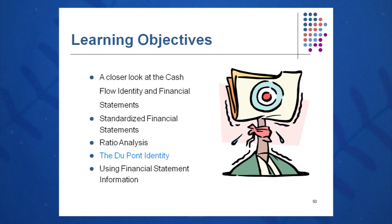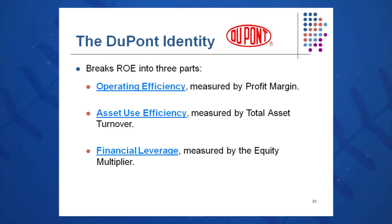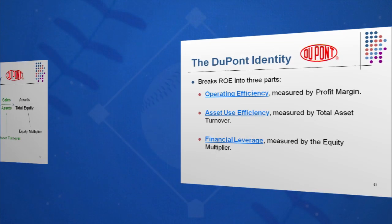But really, you don't have a lot of things you can manage or change there. So some of the folks at DuPont broke this equation into parts. They looked at how they could get their return on equity up, and they broke it into three parts: number one, operating efficiency as measured by profit margin; number two, asset use efficiency as measured by the asset turnover; and number three, financial leverage measured by the equity multiplier.